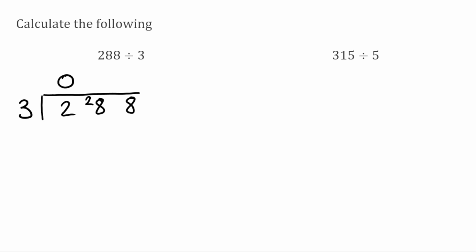3 will fit into 28 nine times because 9 times 3 is 27. If I take that away from the 28 that's going to leave me with a remainder of 1, which I then carry over to my next digit. So now we've got 18 — 3 will fit into 18 exactly 6 times, leaving us with no remainder. So our answer to 288 divided by 3 is 96.